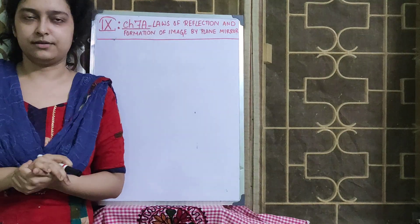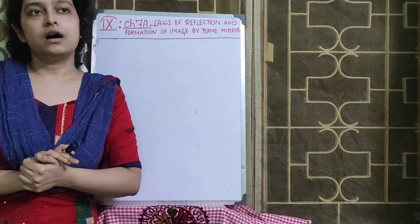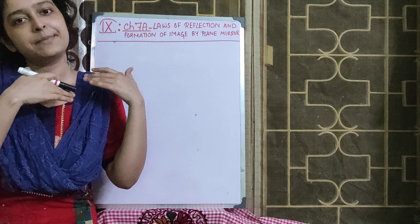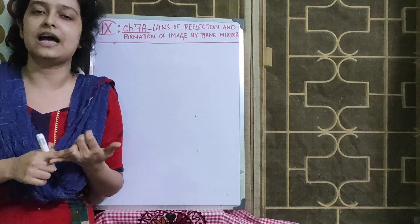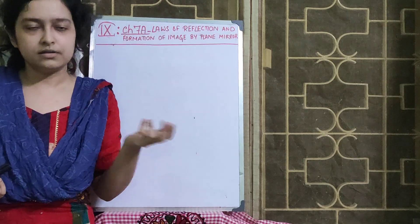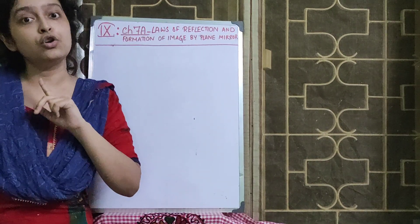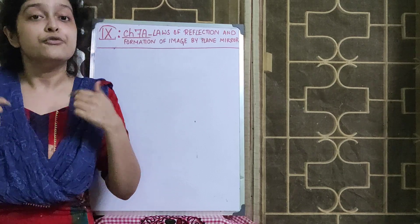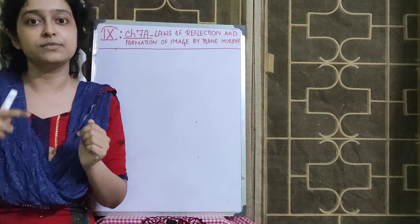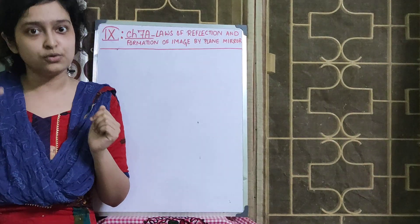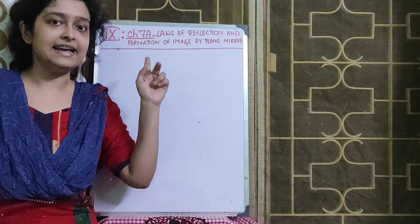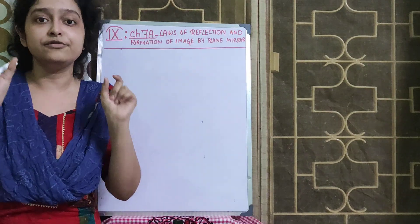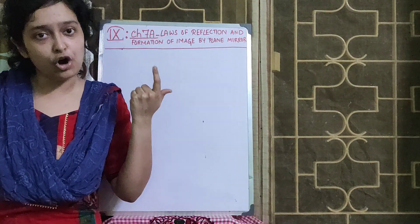Before going into reflection, you know what are luminous objects and what are non-luminous objects. Luminous objects are those which can emit light of their own — for example, natural source like the sun, artificial sources like LED, torch, etc. Non-luminous objects can never emit light of their own. We can see those objects when light from luminous objects falls on them and reflects back to our eyes. That is why this reflection phenomenon enables us to see any objects around us.